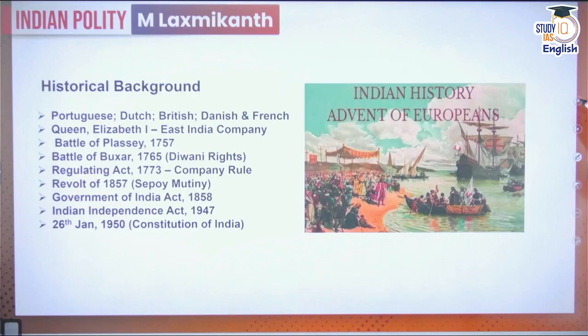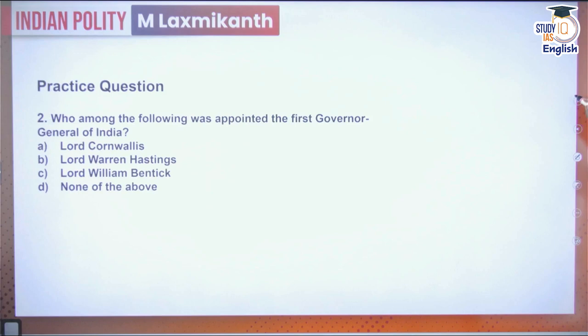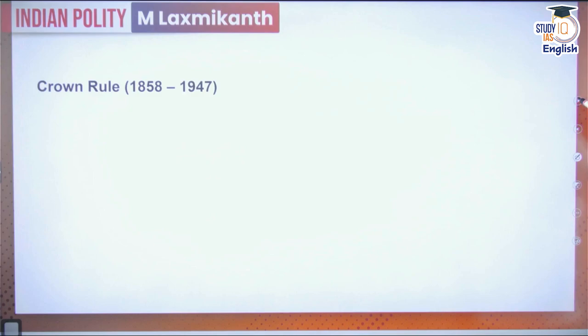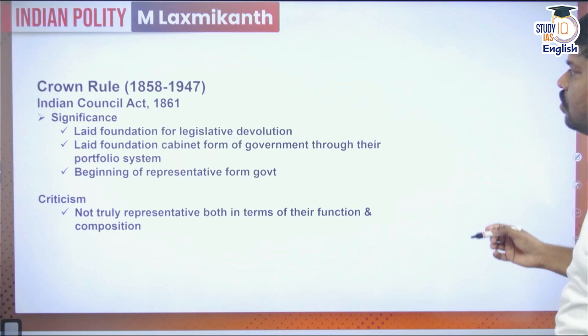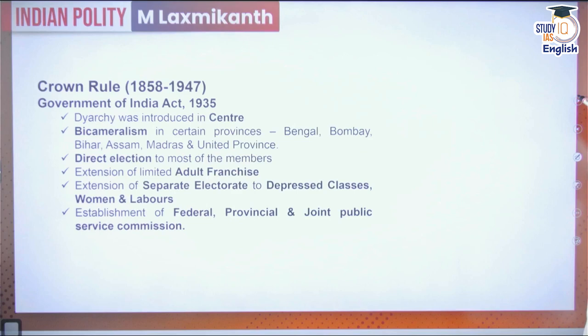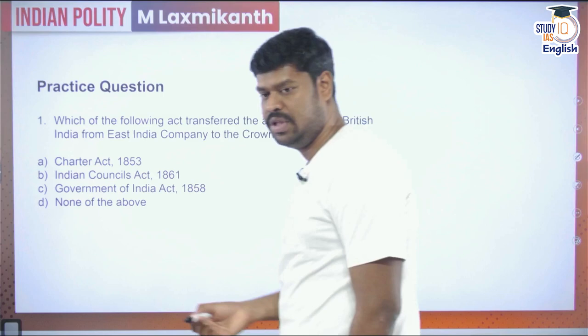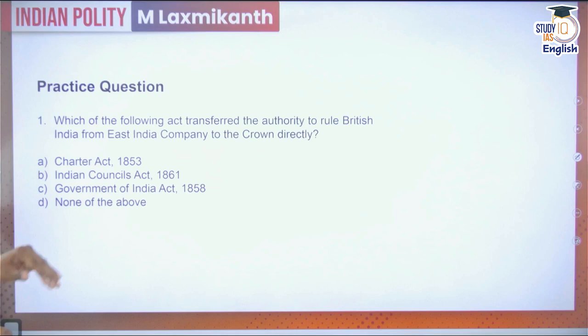We will recollect everything learned from the Regulating Act of 1773 till the Indian Independence Act 1947, divided into two phases: company rule and crown rule. Important events include the Councils Acts, the Government of India Act 1919, the Government of India Act 1935, and reforms during company rule such as the Regulating Acts and Charter Acts. We will revise these through practice questions.